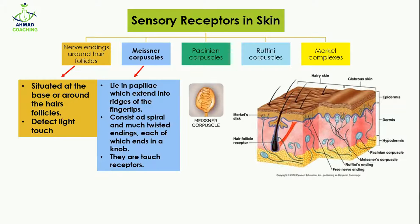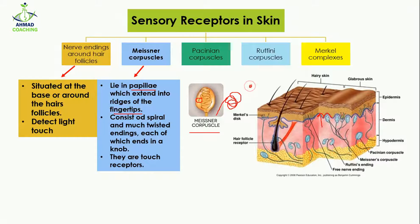Meissner's corpuscles lie in the papillae which extend into the ridges of the fingertips. These are the papillae — the uneven parts of the skin extending into the ridges. They consist of spiral and twisted nerve endings, as you can see here. The nerve endings are not straight but twisted and complex, and each ends in a knob — forming a cluster. They are the touch receptors.